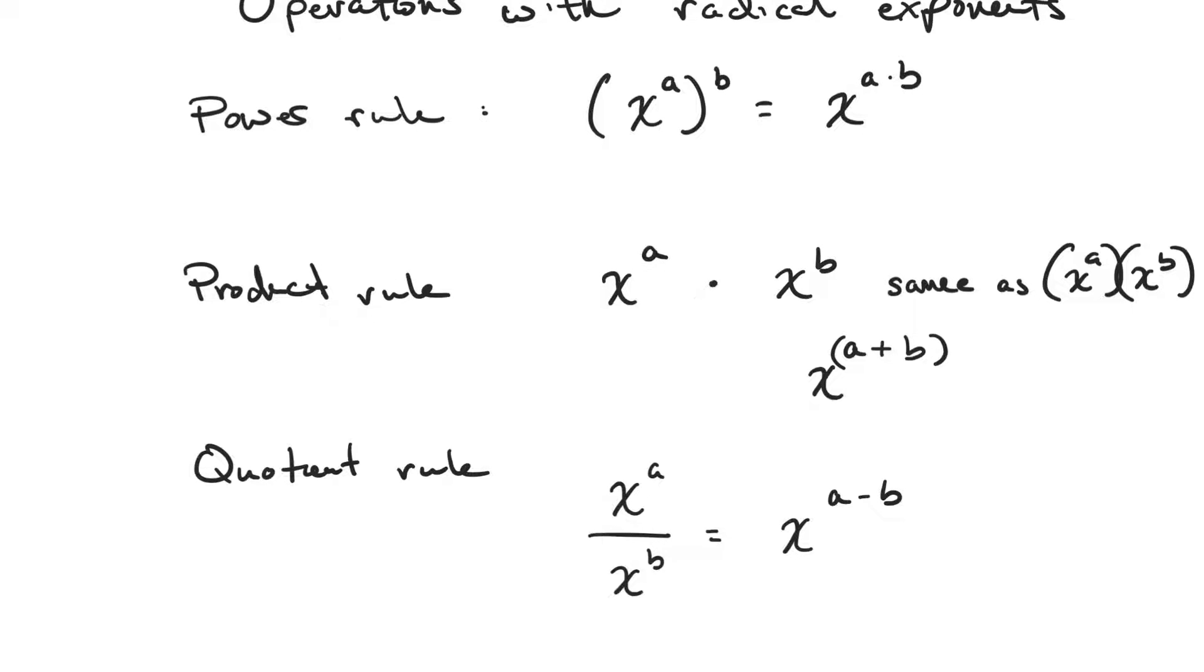Product rule. So product rule states that if you have a base and you're multiplying it by another group that also has the same base, which you can do is you can take the a and the b here, so it's just representing their exponents, and you can add them. Now, I want you to understand that x to the a times x to the b is the same as if I wrote them as individual groups, because in algebra, there's two ways we represent multiplication, which is with this dot, or we represent it with back-to-back parentheses.